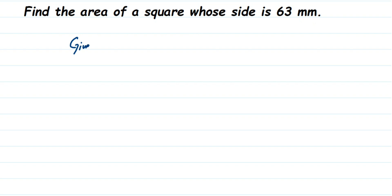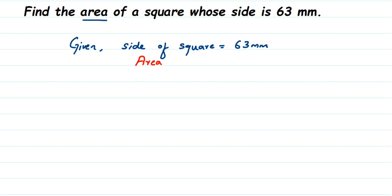Given: the side of the square is equal to 63 millimeters. We have to find the area of the square. We'll use the direct formula: area of a square is side multiplied by side, or side squared.